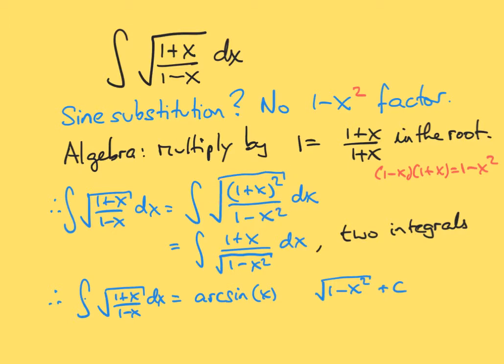The square root of the numerator is just 1 plus x. x cannot be larger than 1 and it can't be less than minus 1 for this to be positive. So 1 plus x will be positive. So we just take the square root and write that as 1 plus x. And on the bottom, we have the square root of 1 minus x squared.